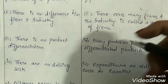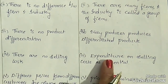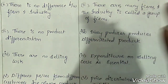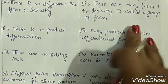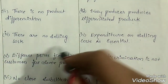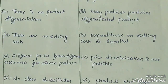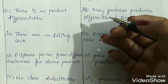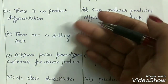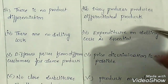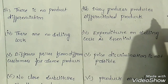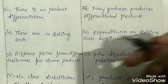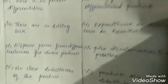Next: there is no product differentiation in monopoly market — the products sold are homogeneous in nature. But in monopolistic market, every producer produces differentiated products. There will be many brands or companies producing products different from each other in terms of size, quantity, quality, shape, color, or other attributes. Next: there are no selling costs in monopoly market because there is a single seller who faces no competition, so he does not need to incur advertising or salesman costs. But in monopolistic market, there is heavy competition, and each firm must incur selling costs for advertisements, sales promotion activities, etc.